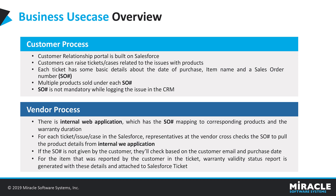For every ticket within Salesforce, a representative at the vendor cross-checks the sales order ID. By using the sales order ID, they get the product-related information from the application. If the expo number is not provided by the customer, they cross-check using the customer's email ID and the date of purchase. Once the information is retrieved from the internal web application, warranty is calculated and then a report is generated for that specific ticket. The same report is then uploaded onto the Salesforce portal.